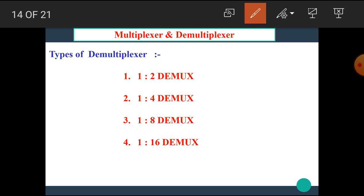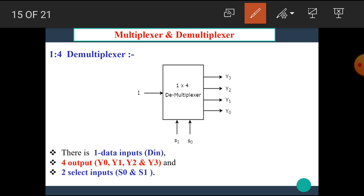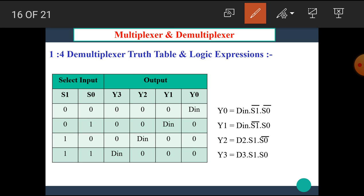There are types of the demultiplexer such as 1-to-2, 1-to-4, 1-to-8, and 1-to-16 DEMUX. Let's see the 1-to-4 demultiplexer, which has one input and four outputs Y0, Y1, Y2, Y3, and requires two select inputs S0 and S1.